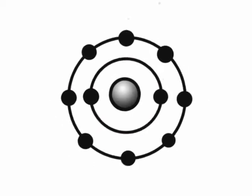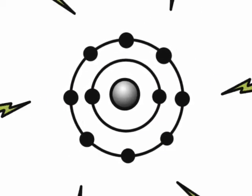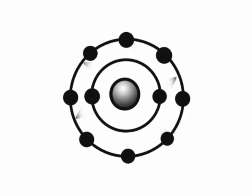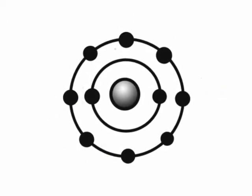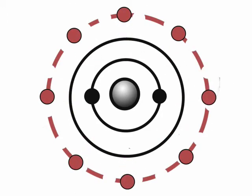When energy, in this case electricity, is applied to neon atoms, the eight electrons in the outer energy level get very excited. No, not that kind of excited. They simply absorb the energy and jump up an additional energy level.